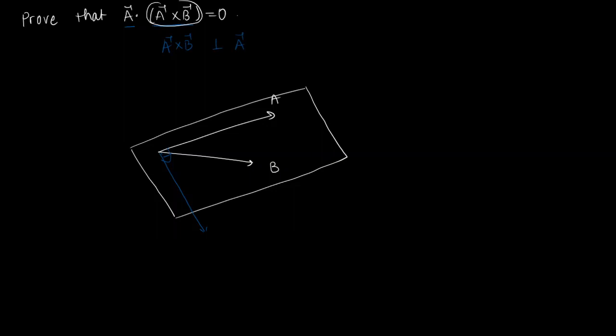And we know that the dot product of any two vectors, the dot product in this case A dot A cross B, that's going to be equal to the magnitude of A times the magnitude of A cross B times the cosine of the angle between them. And the cosine of the angle between A and A cross B, because they're both perpendicular by the definition of the cross product, this angle is going to be 90 degrees. And cosine of 90 degrees is just zero.